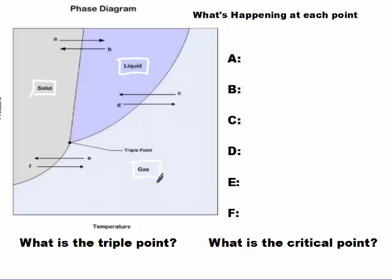In A, we're going from a solid to a liquid. That's called melting. In B, we're going from a liquid to a solid, so freezing.